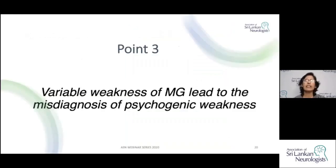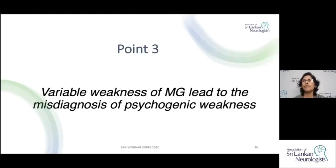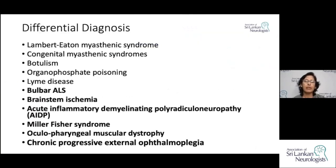The variable weakness in myasthenia gravis can lead to misdiagnosis as psychogenic weakness. Patients may be able to rise from a chair on one occasion but not another, or manage stairs at one time and fail at another. This variability, especially in a young female, can easily be mistaken for functional illness. It is essential not to miss myasthenia gravis as it is a life-threatening condition.